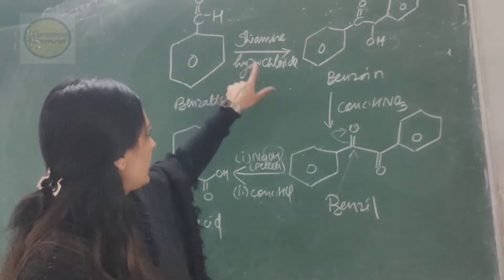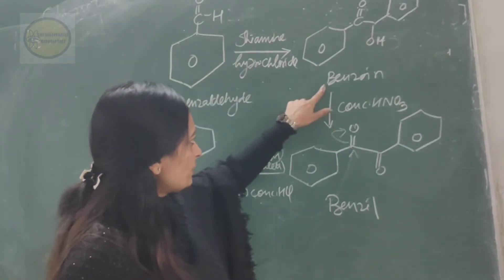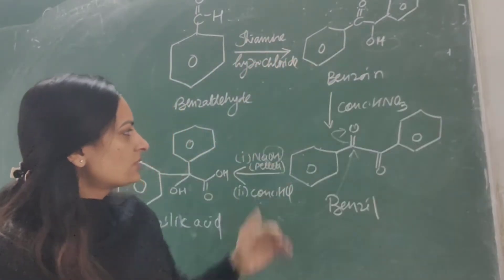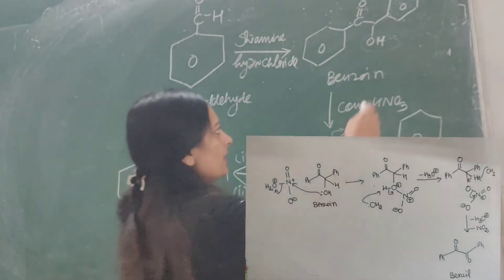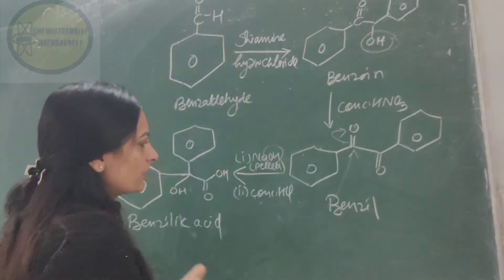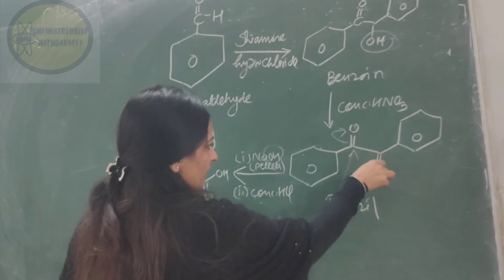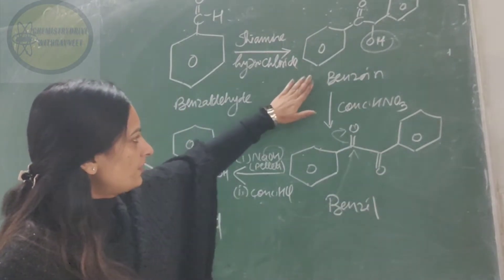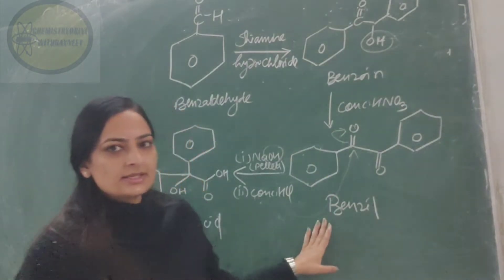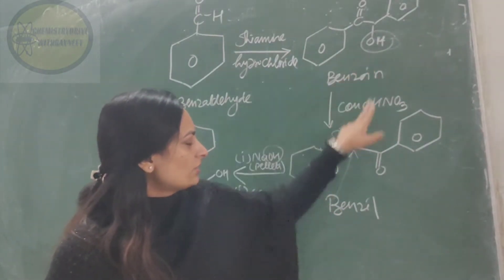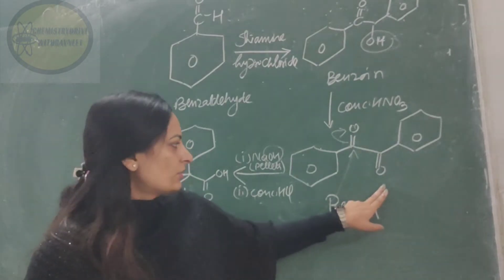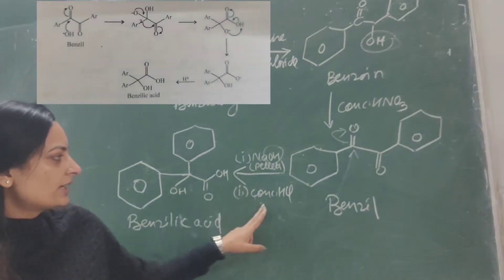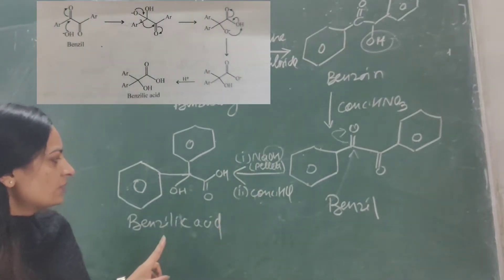Firstly, benzaldehyde reacts with thiamine hydrochloride to form benzoin. This benzoin then undergoes oxidation in the presence of concentrated nitric acid, in which the hydroxyl group gets converted to the carbonyl group — that is, a C double bond O — giving the structure of benzil. The only difference between benzoin and benzil is that benzoin has a hydroxyl group where benzil has a carbonyl group. Then benzil reacts with NaOH in the presence of concentrated HCl to give benzilic acid.